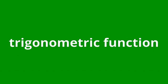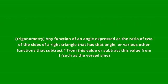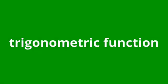Trigonometric Function. Trigonometry: any function of an angle expressed as the ratio of two of the sides of a right triangle that has that angle, or various other functions that subtract 1 from this value or subtract this value from 1, such as the versed sign.